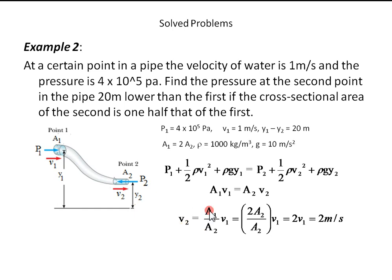Solving for V2, A1 over A2 times V1. For A1, we substitute 2 times A2 to get V2 to be 2 meters per second. Substituting the given values here, we get the pressure to be 5.98 times 10 to the power of 5 pascals.